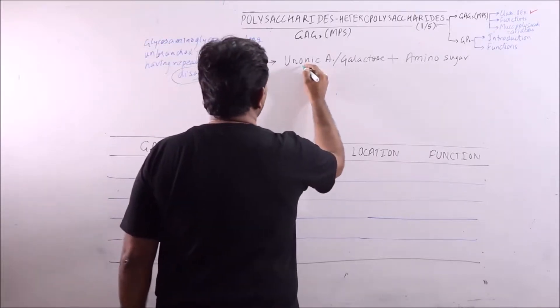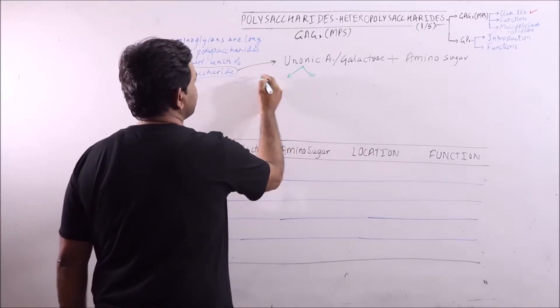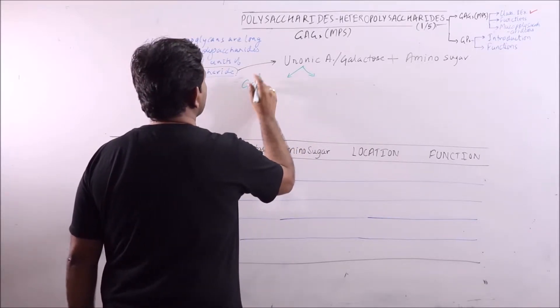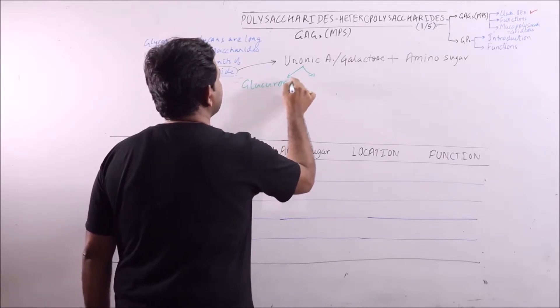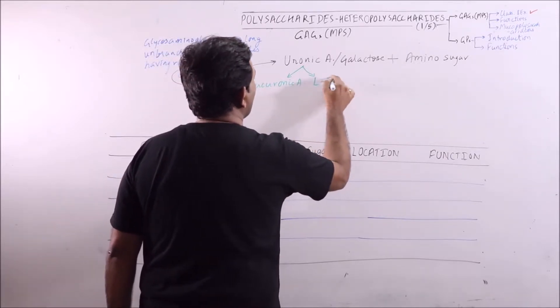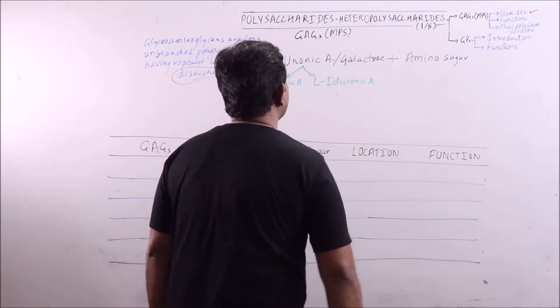Among this, if uronic acid is present then glucoronic acid will be there or L-iduronic acid will be there.